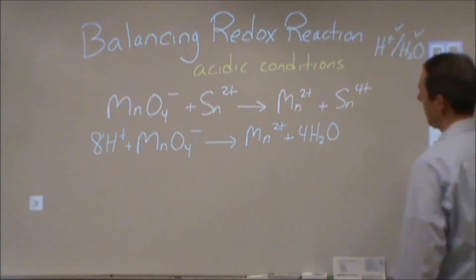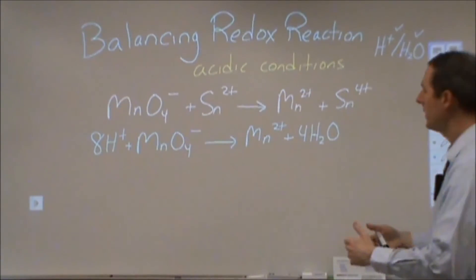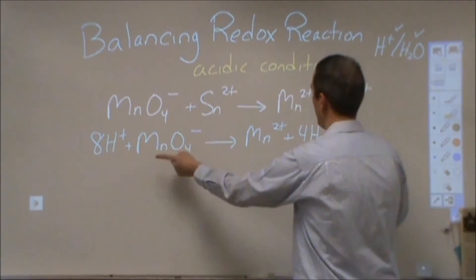Then I would take the Hs and balance those with H+. At this point, all of my elements are balanced. I've got one manganese on each side, four oxygens, and eight hydrogens on each side.